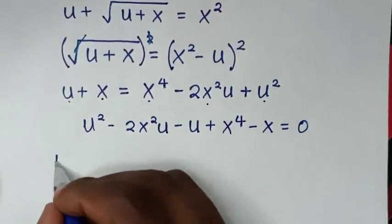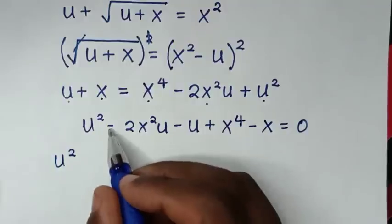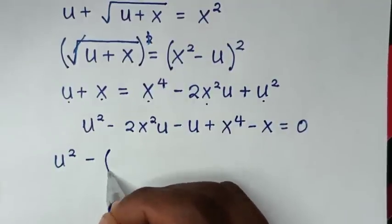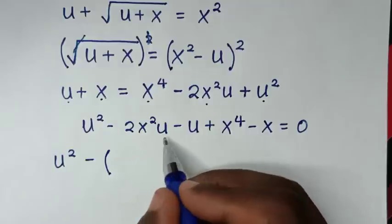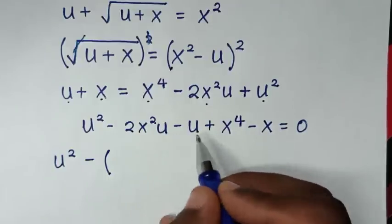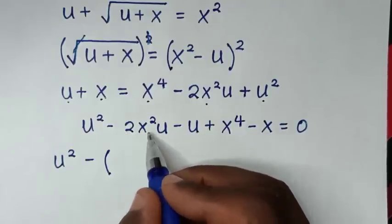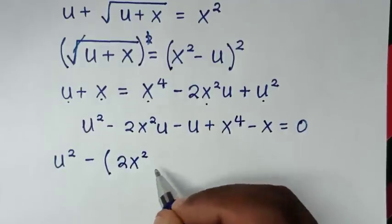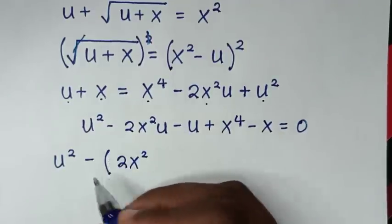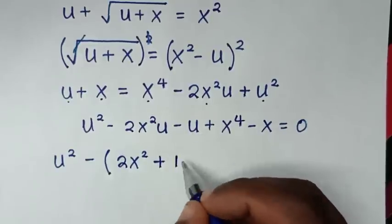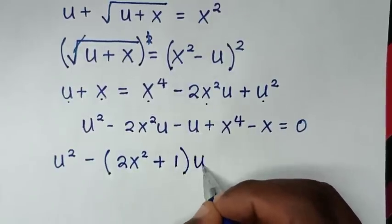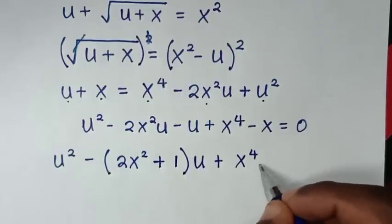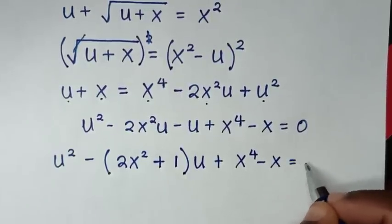Simplifying: we have u squared. Then taking negative as common, and u as common from the bracket, gives: negative bracket 2x squared plus 1 bracket times u. Then plus x to the power 4 minus x, equals 0.